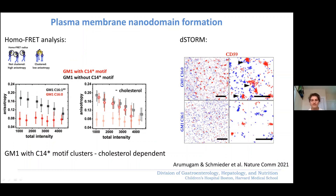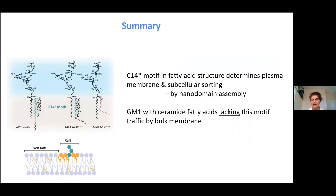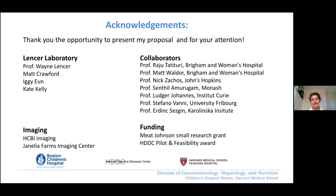As the take-home message, we find that in the cell and at the plasma membrane, a C14 motif within the acyl chain of GM1 determines both plasma membrane behavior and subcellular trafficking, presumably through nanodomain formation. GM1 species lacking the C14 motif traffic by bulk membrane flow into each of the subcellular pathways. With this, I'd like to end and thank you for your attention and the opportunity to present, as well as my supervisor Wayne Lenzer, my funding agencies, and the many collaborators who contributed to this project.